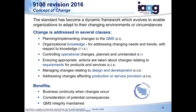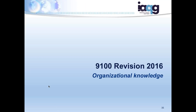There is a clause on the concept of change — that's Clause 6.3 — but there are also many other references throughout the standard talking about change. In organizational knowledge, as your business changes, what you need to maintain for organizational knowledge needs to change. In operations, as you have planned and unintended operational changes, how do you manage those activities? How do you ensure actions are communicated within your design and development process and your production process? The benefit is ensuring business continuity when changes occur, considering the consequences and maintaining quality management system integrity.